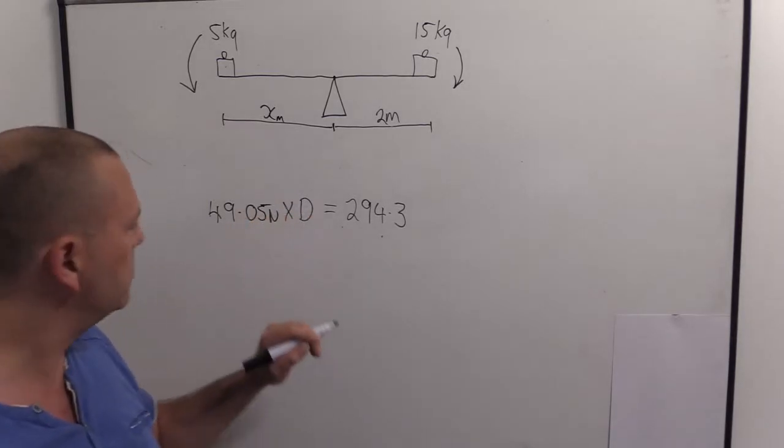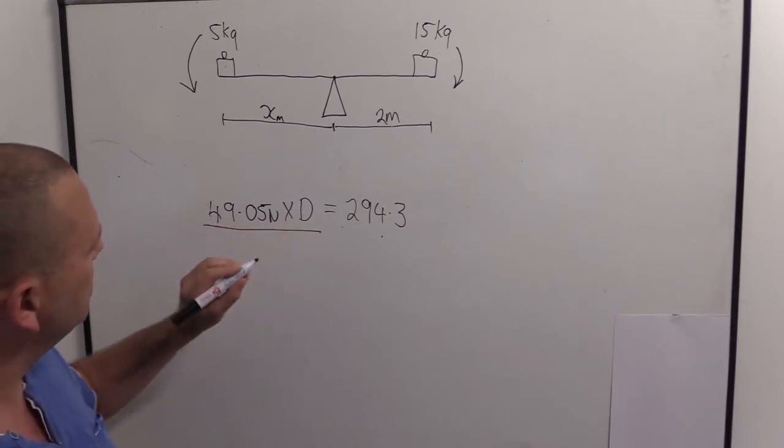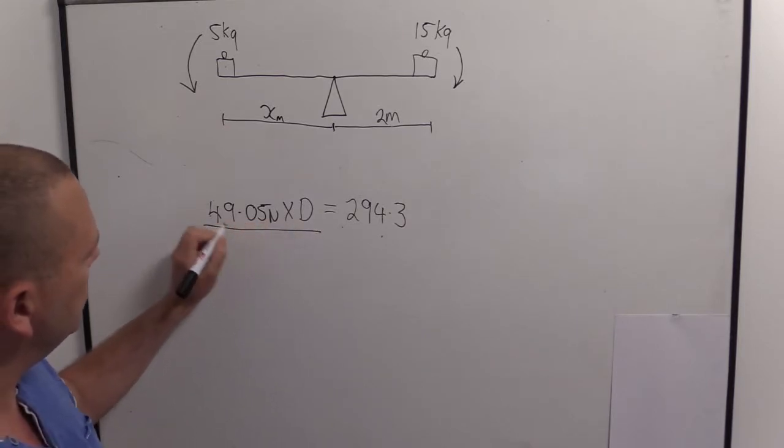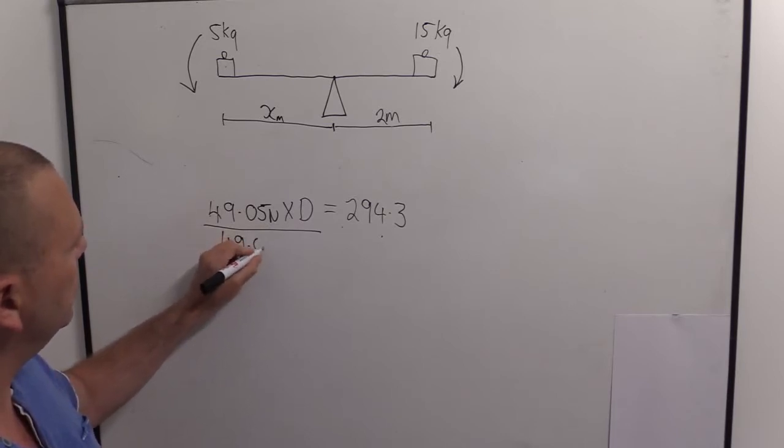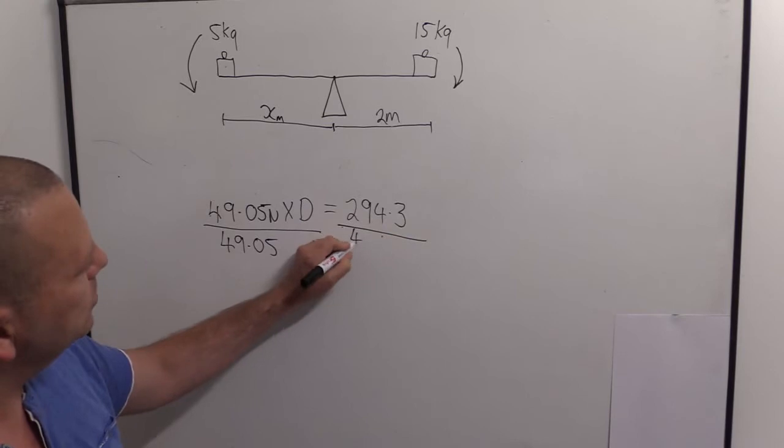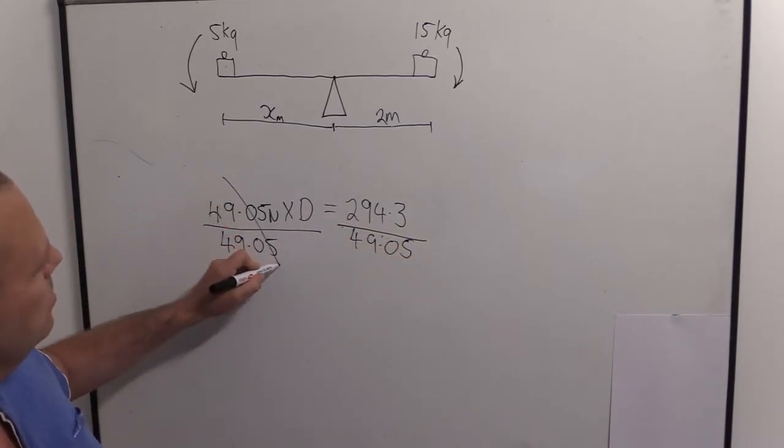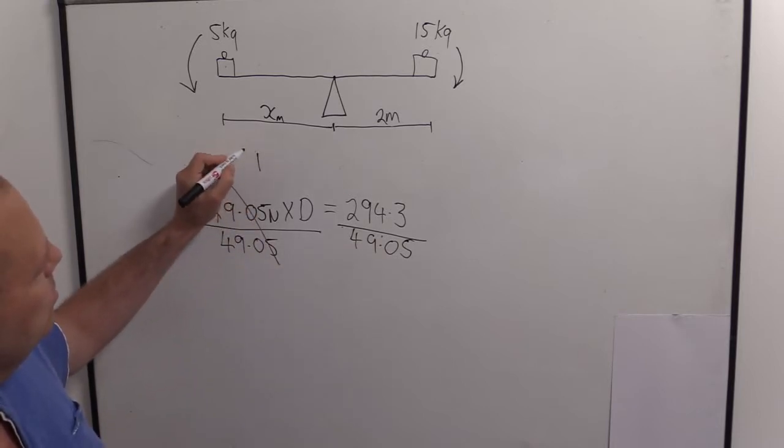So all we got to do is isolate d, and that means getting rid of this. So the opposite function by itself in time, so we're going to divide by 49.05, and then we're going to copy at this side 49.05. And then we can cancel, and that leaves us with an equation. And I'm going to turn this back into x now.